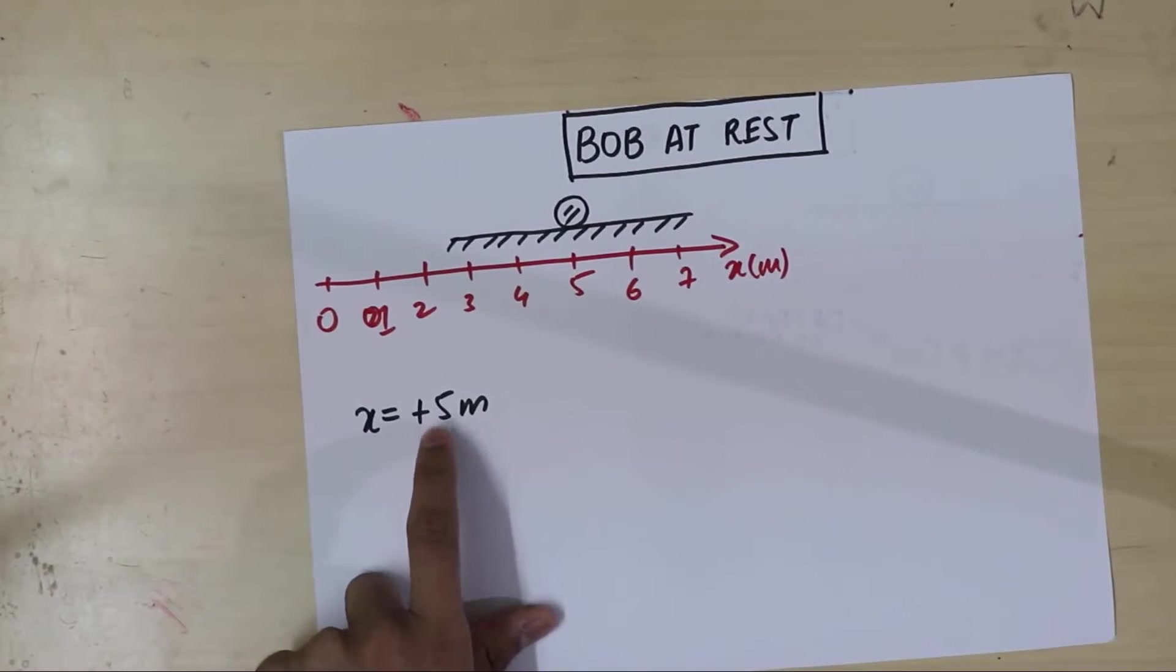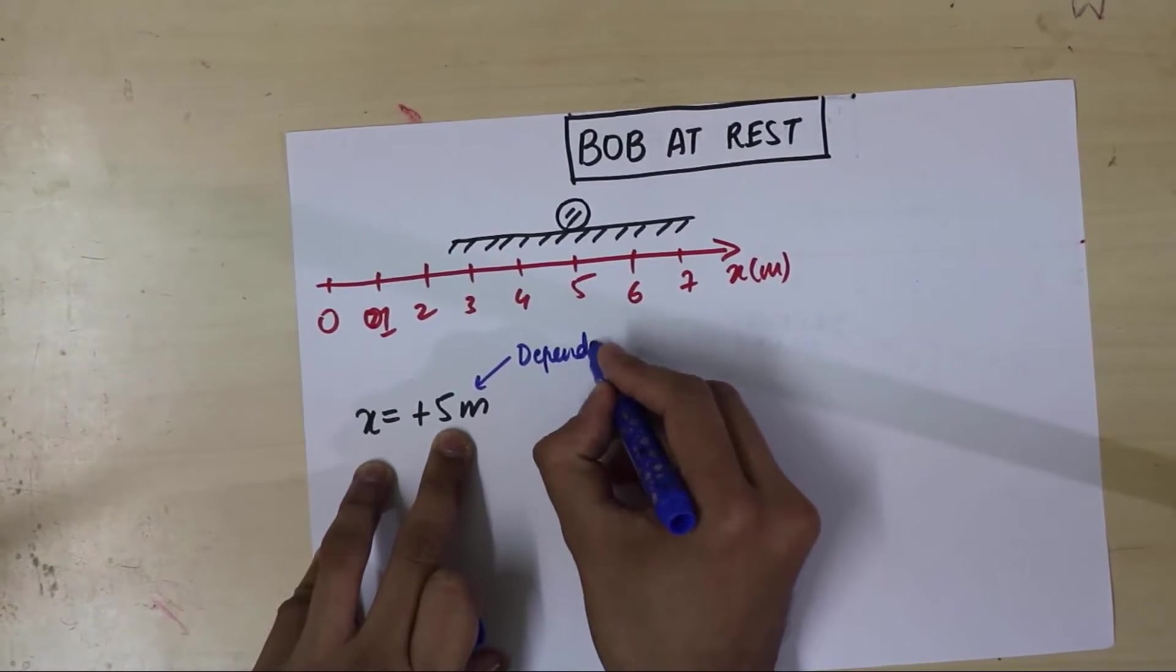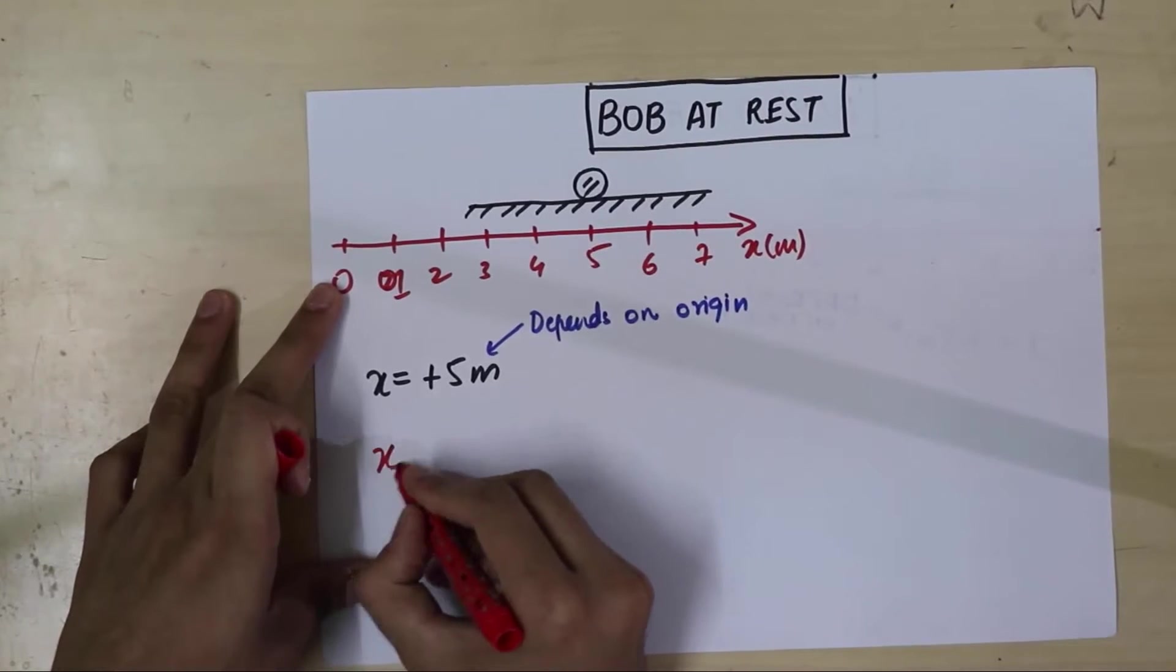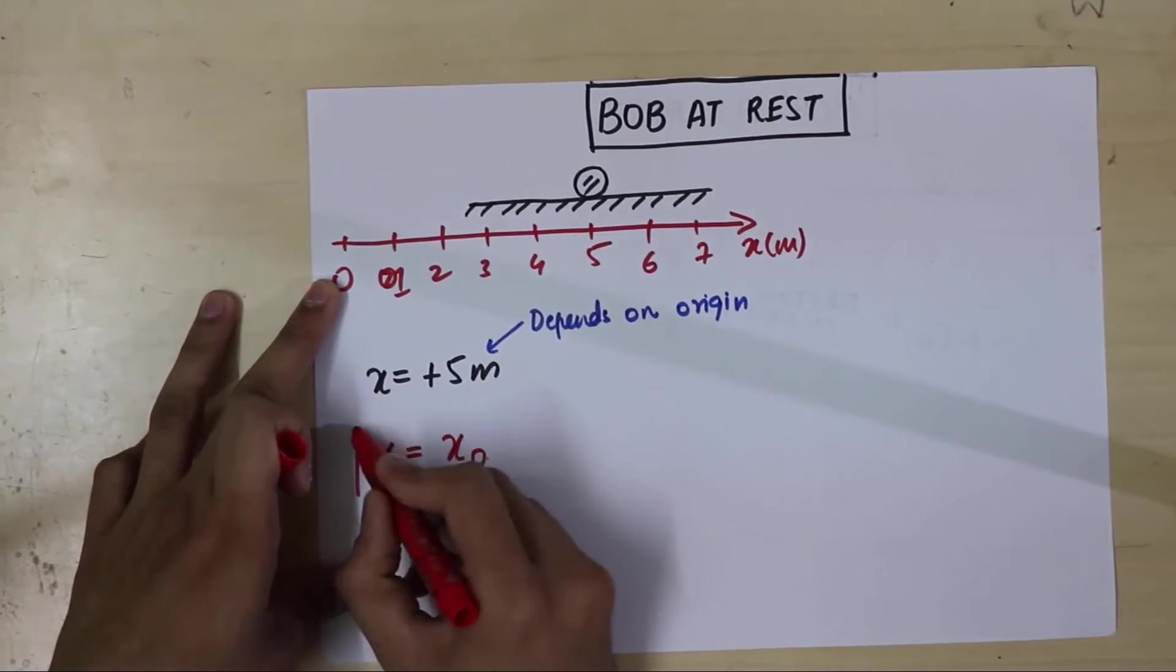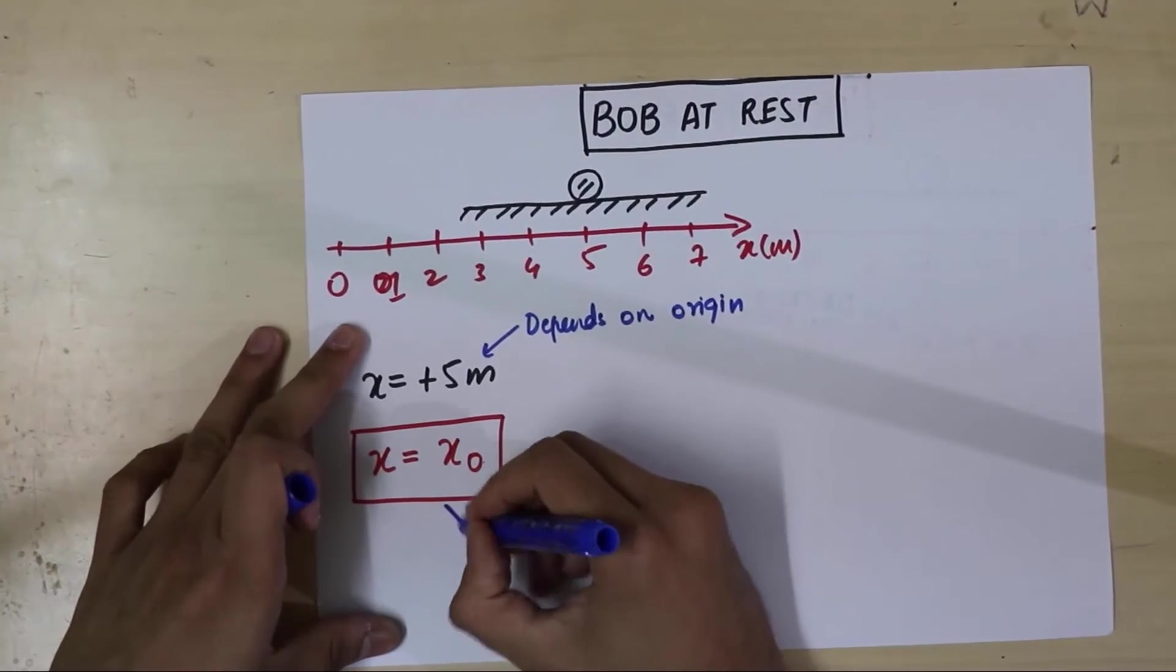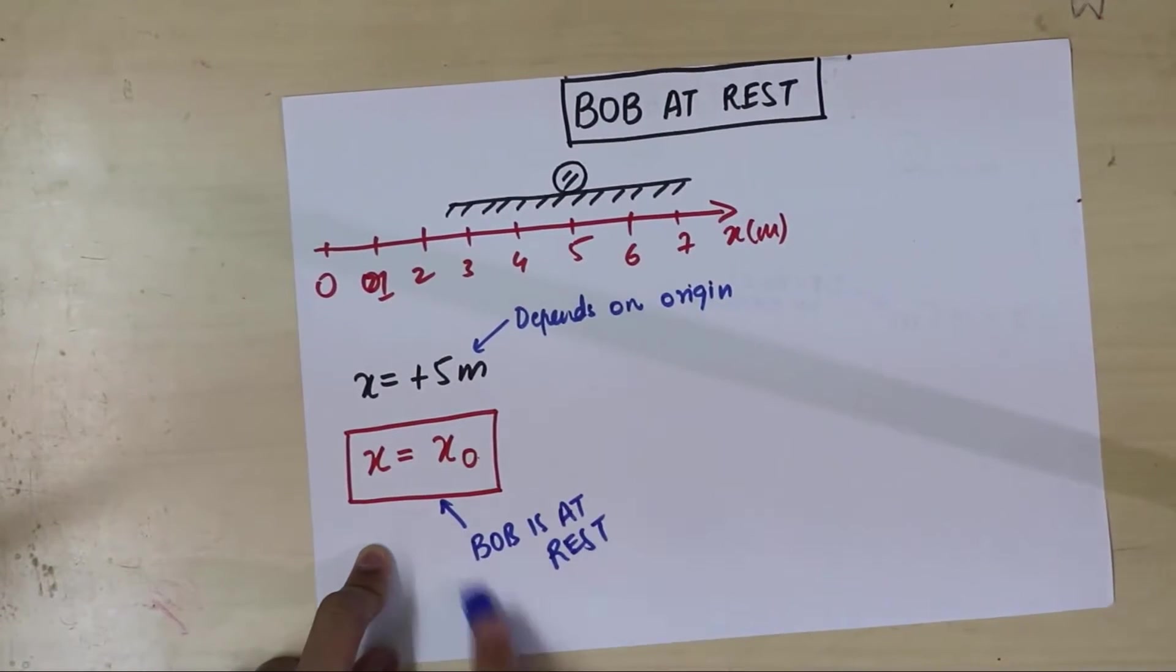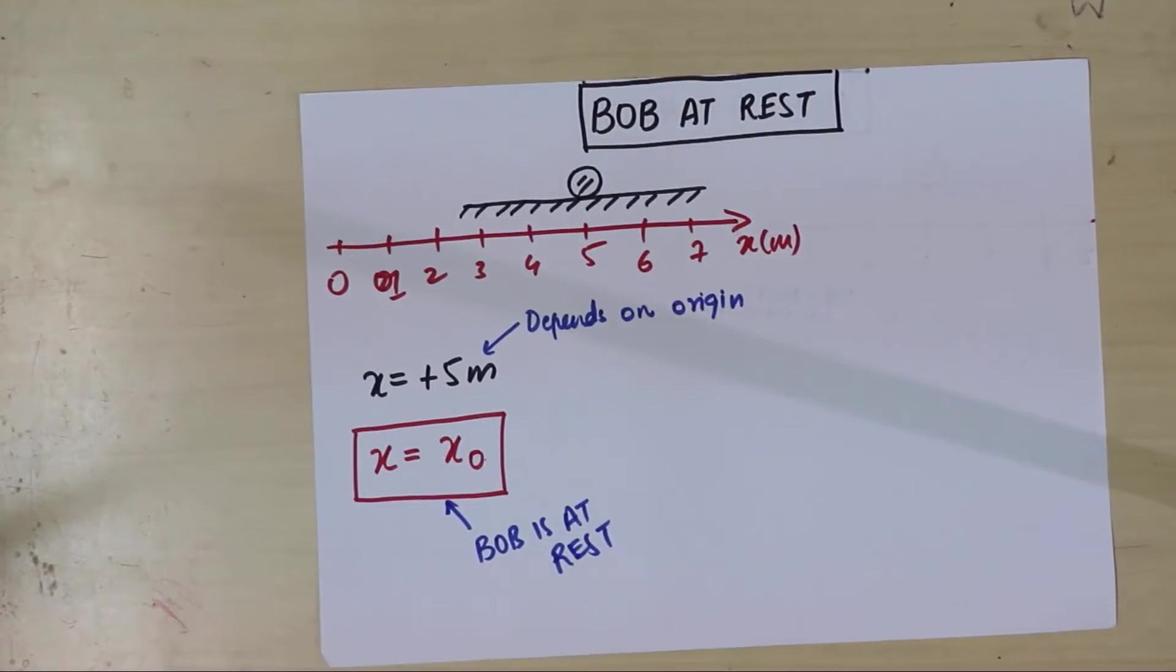So we need to write this equation in general. What is the general equation for this? Here, this number depends on the origin. So what is the general equation? That's what we want to do in physics. We want to write things in general. In general, I could say position of Bob, x, represents the position, is some number. And we'll call it as x-naught. And here is your first official equation of kinematics. This equation tells you Bob is at rest. Look at that. Such a simple equation. Look at the equation and look at the sentence. Sentence takes such a long time to write. But the equation, just three things. You see, that's why we love equations. x equal to x-naught. Excellent.